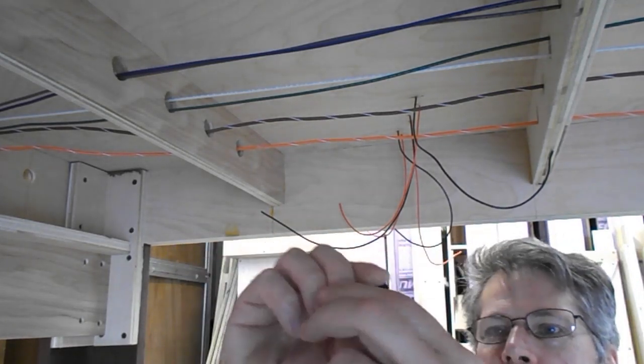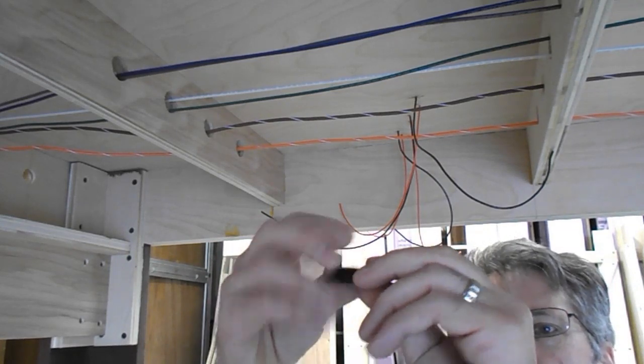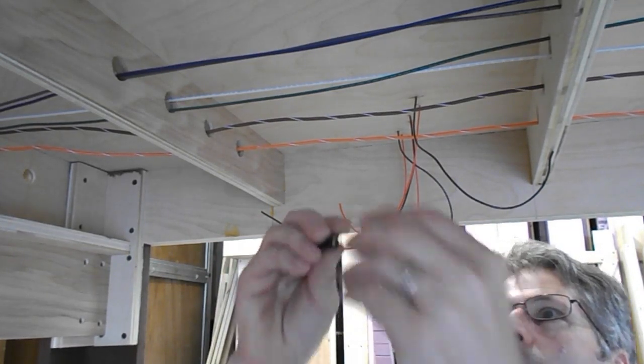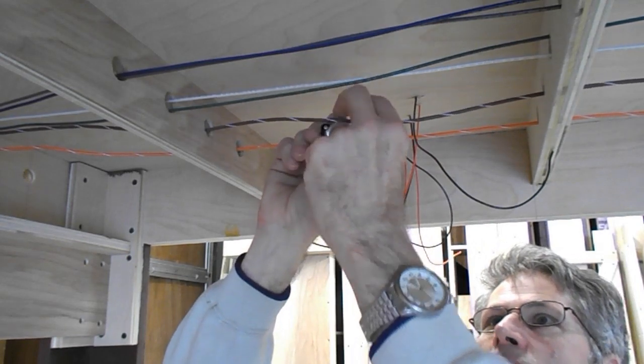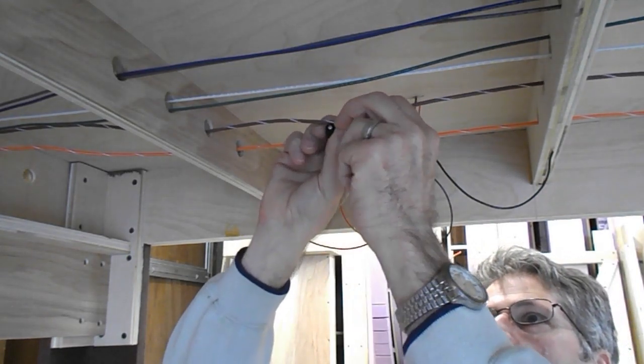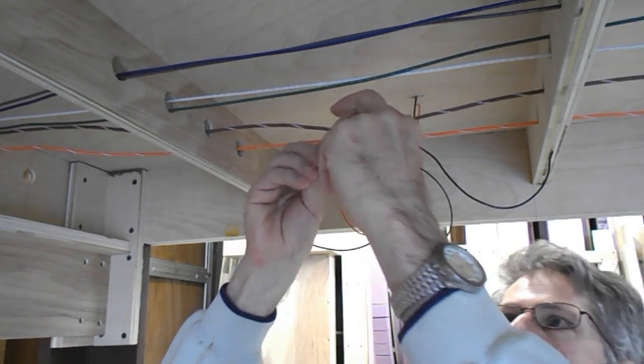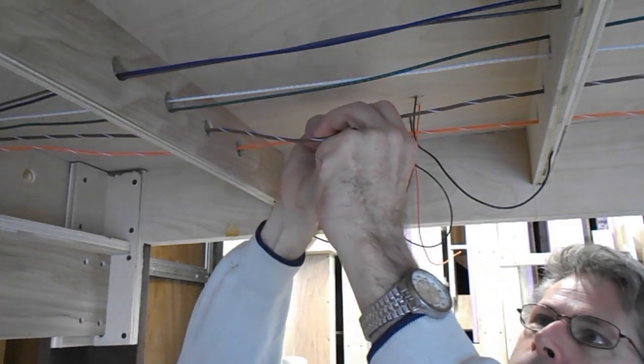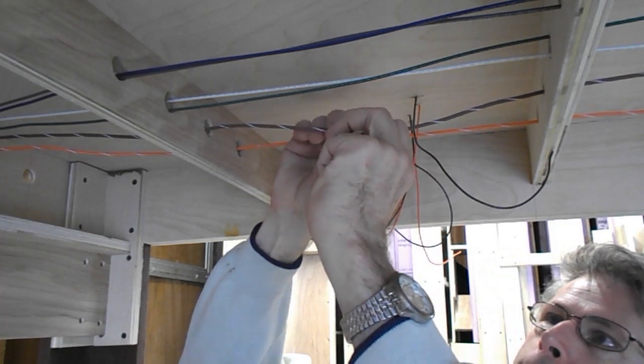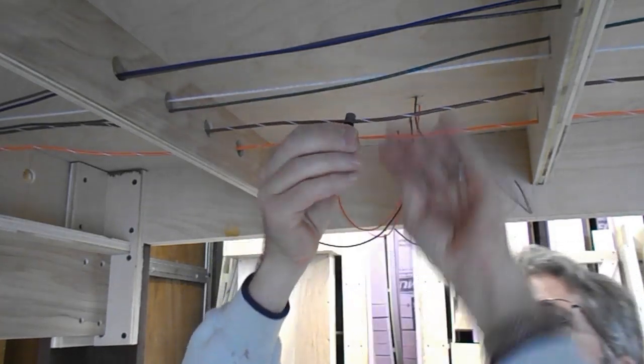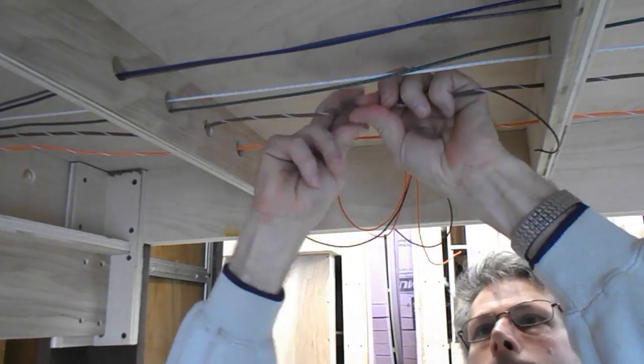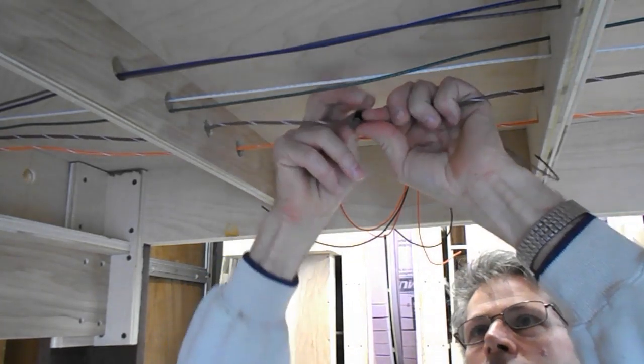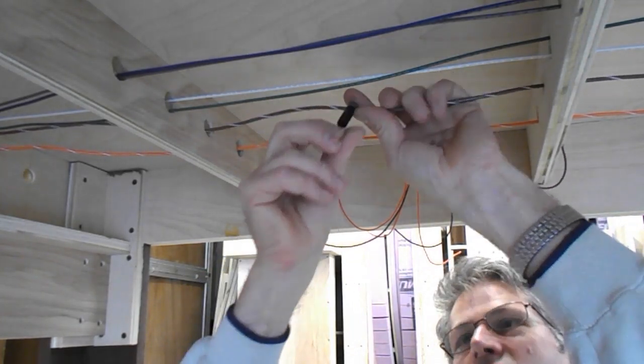The PosiTaps have a grey end and a black end. The grey end needs to be taken off completely. And then insert the legs over the wire and screw the main barrel back on again. And just keep screwing until it's tight.